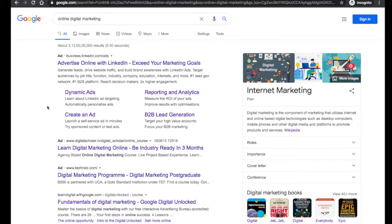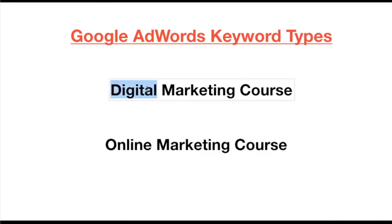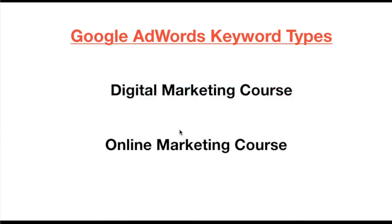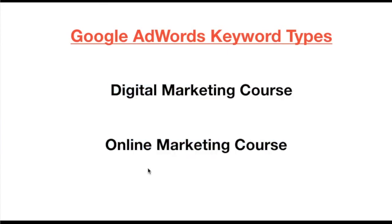With the help of keywords, you can manage your advertisements. You can tell Google: show my ad only when someone searches for 'digital marketing course.' You can also tell Google AdWords: do not show my ad when someone searches for 'online marketing course.' It's totally up to you in which keyword you want to show your advertisement.